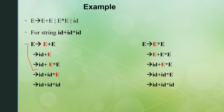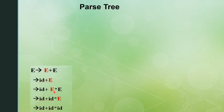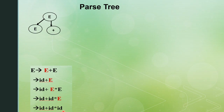The grammar is ambiguous because we have two different ways of deriving the same string. This is the parse tree difference. In the first derivation, the first step applies E plus E, and the subsequent steps replace each E with the appropriate sub-expression, producing a different parse tree structure.